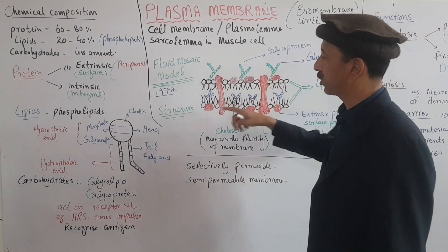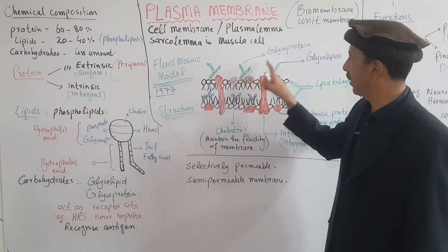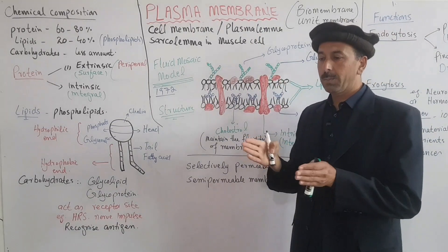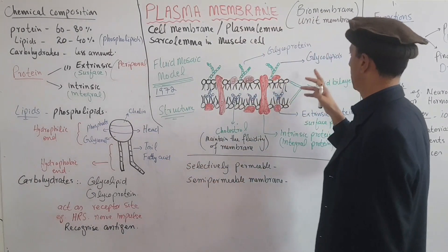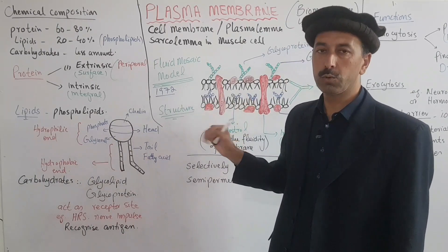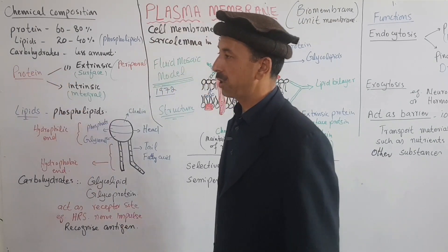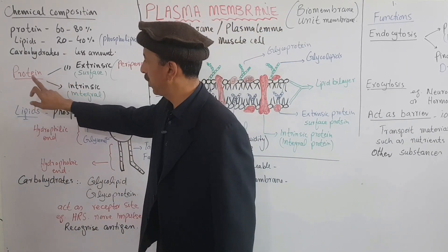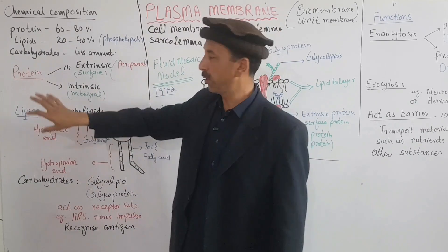In addition to cholesterol, carbohydrates are present in the form of glycoproteins and glycolipids. The conjugate of glucose with protein is called glycoprotein, and with lipid is called glycolipid. These molecules form the glycocalyx.